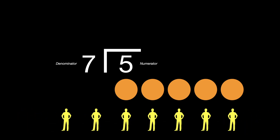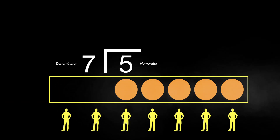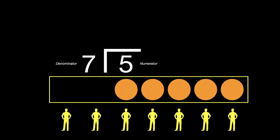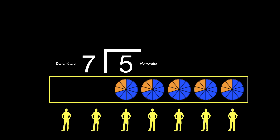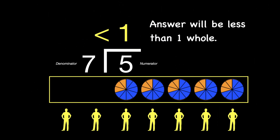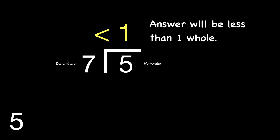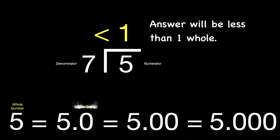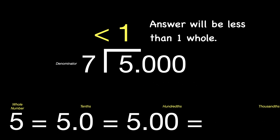And we have seven people, and we want to divide those evenly. Notice that two of the people don't have a whole pizza to themselves. So we're going to have to work with the five that we do have and begin to cut those five into smaller pieces. When we do that, our answer is going to be less than one whole, which means we're going to start to get into our decimal place values. Keep in mind that five is a whole number, but five is equal to five and zero tenths, or five and zero hundredths, and even into the thousandths place value. Those are equivalent, and you are allowed to write those zeros in without changing the value of the number. And that's what we're going to be doing in the next problem.